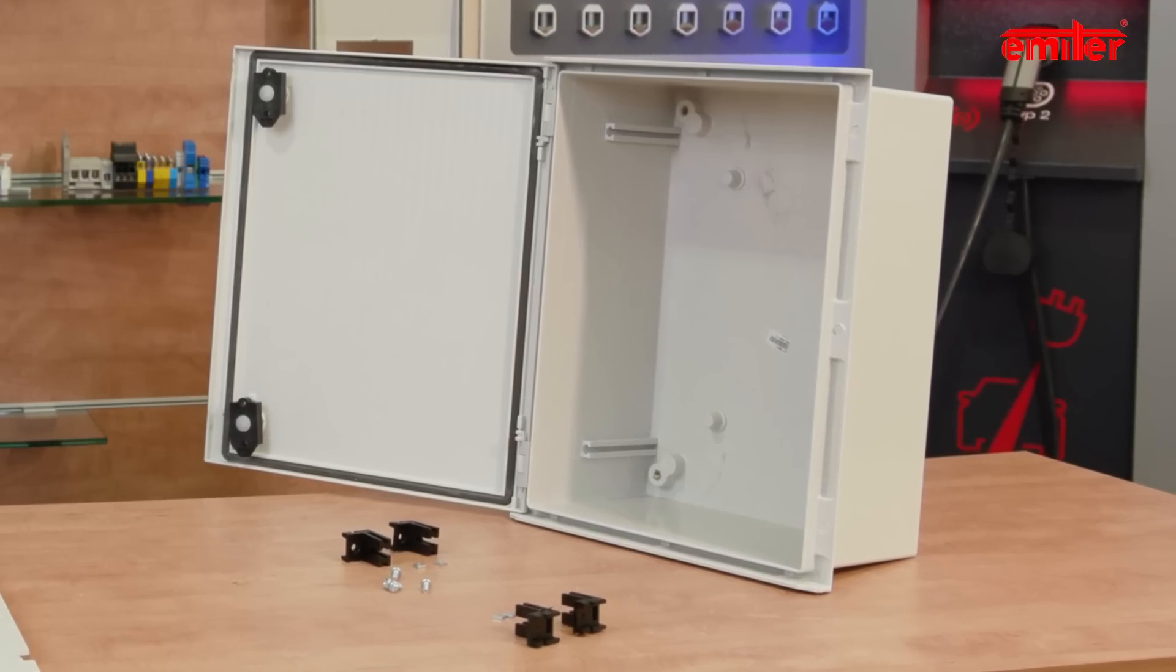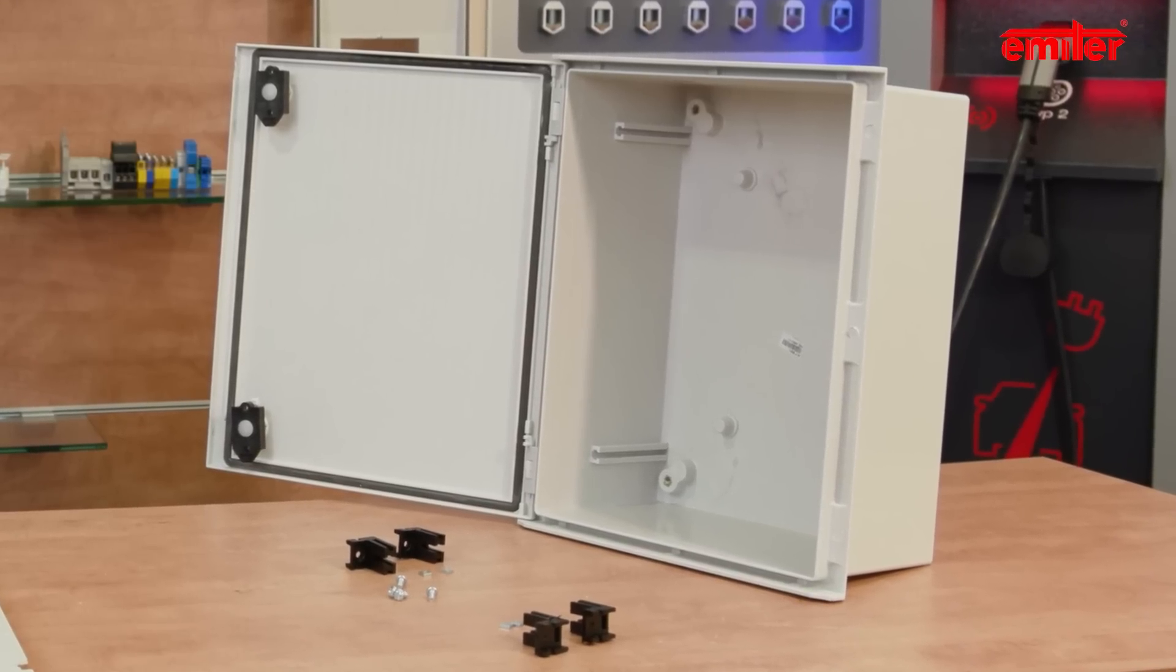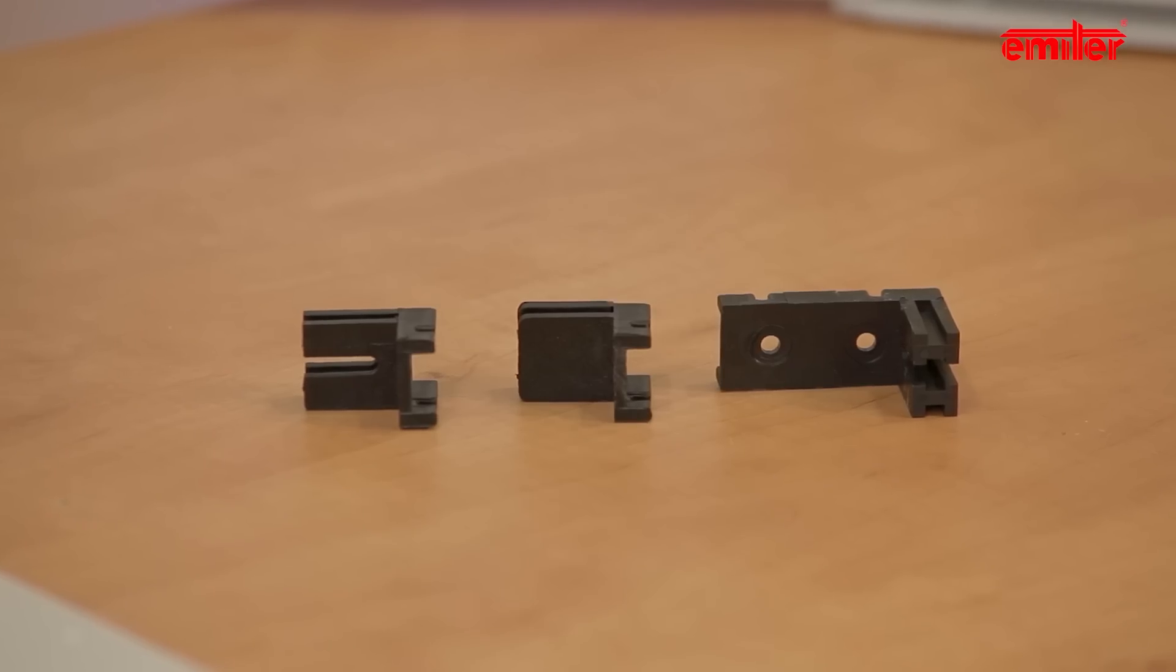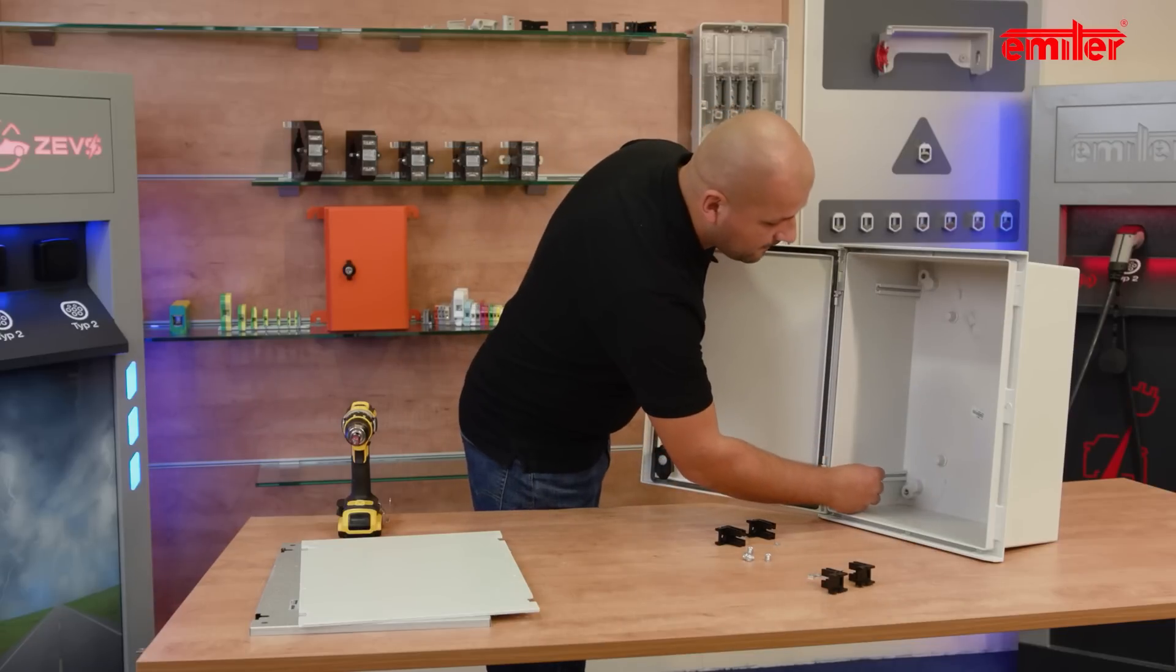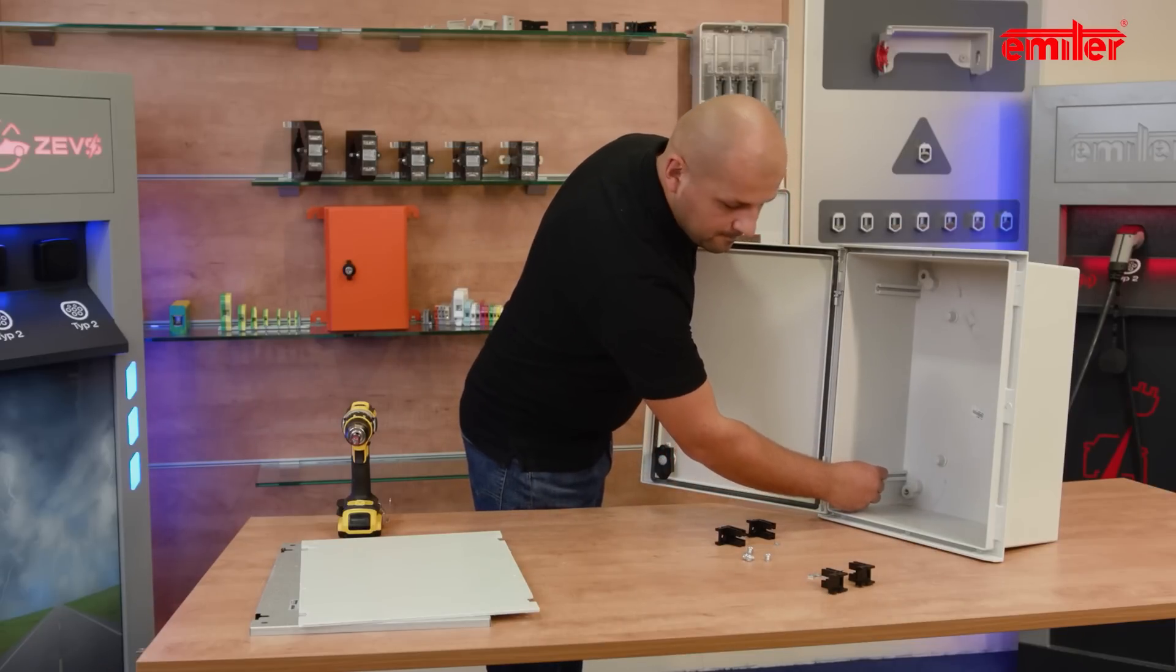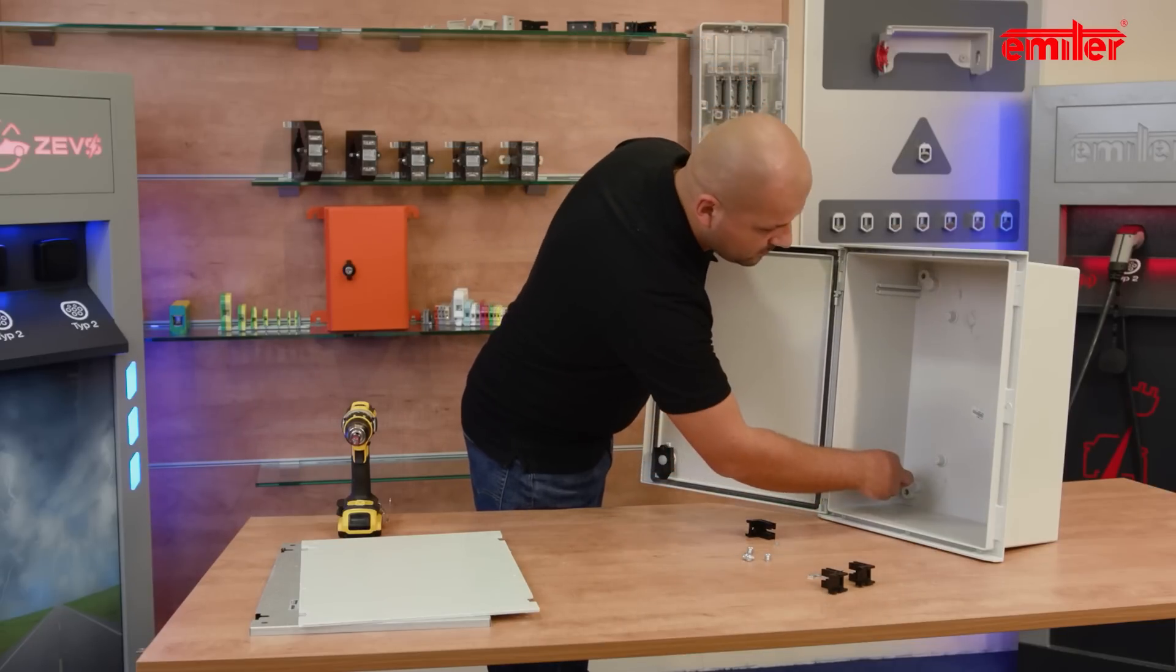If we need more space between the mounting plate and the back of the cabinet, then we can install it with use of angle holders. Installation is fast and easy. First, we mount the holders to rails which are placed in the side of the enclosure.